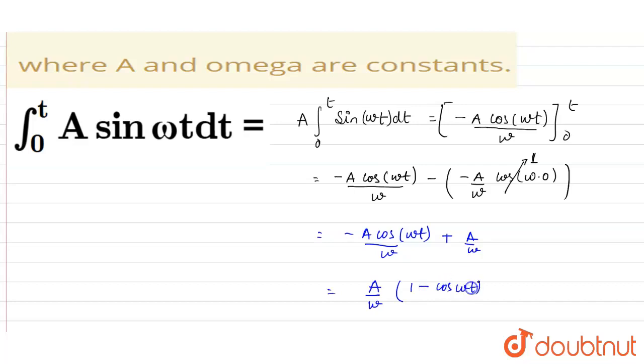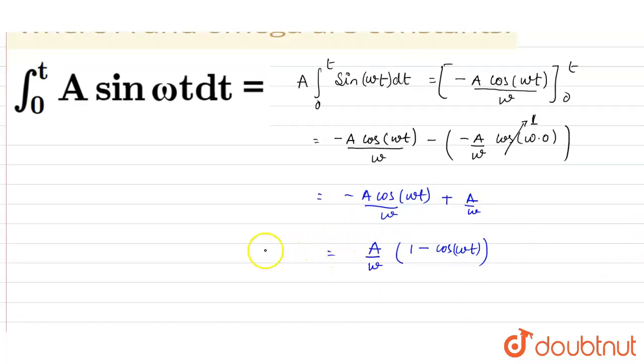So the value for the integration comes out to be this. So integral 0 to t, A sin ωt dt equals A/ω × (1 - cos ωt), which is the required answer. Thank you.